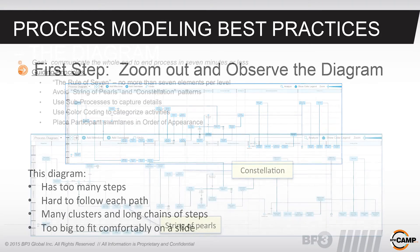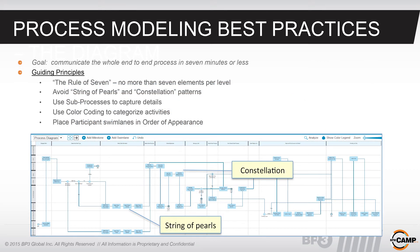The overarching goal is to communicate — you want to be able to talk through the end-to-end in about seven minutes or less. The rule of seven is a guiding principle: you don't want more than seven elements visible at any one time per process level, including activities, gateways, and events. You really want to avoid the string of pearl and constellation patterns — those long strings of activities in the same swim lane. Instead, use sub-processes to capture that detail, so the user can get a good idea of the overarching process and then drill down when they're ready to.